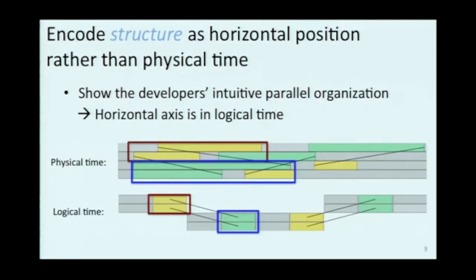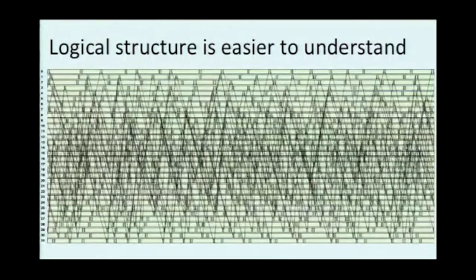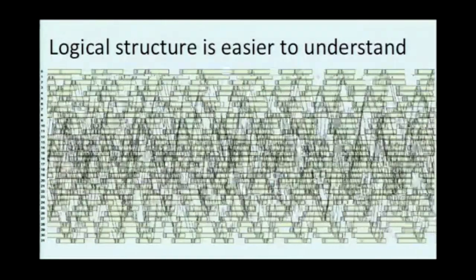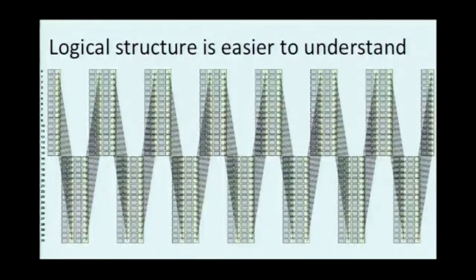Let's look at a slightly bigger example — 32 processes in physical time. As you can see, it's very cluttered and not intuitive. When we switch it to logical time, this is going to detangle all the lines. We realize, oh, this is actually a very easy-to-understand pattern. Now we can take all of those things we recorded and very quickly see where we were in it. We have that context back of what we were doing.